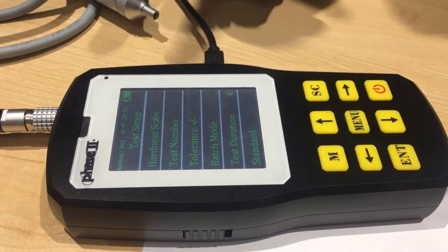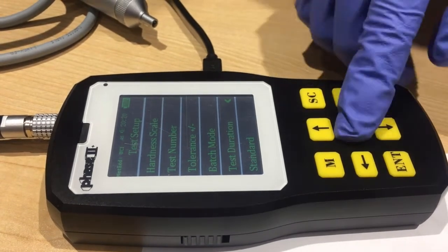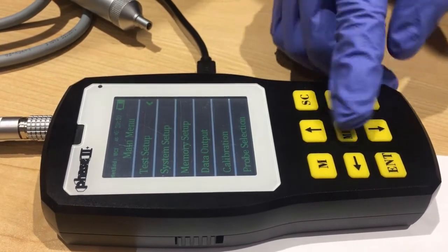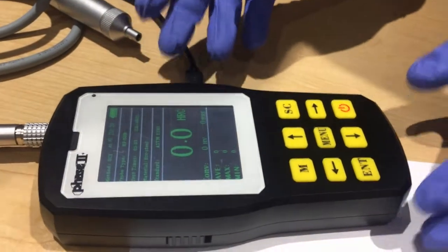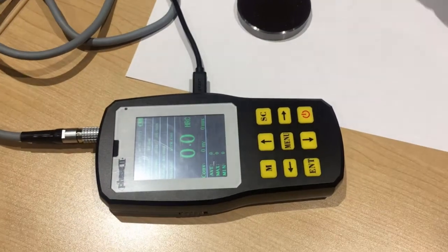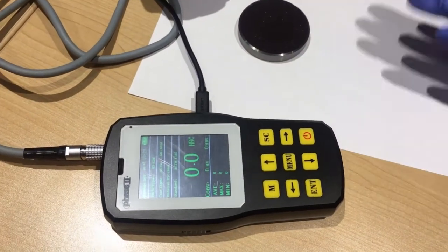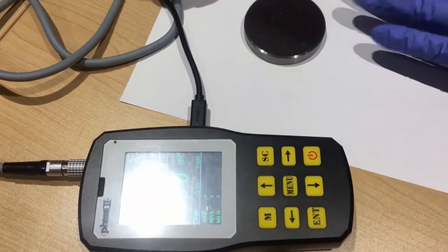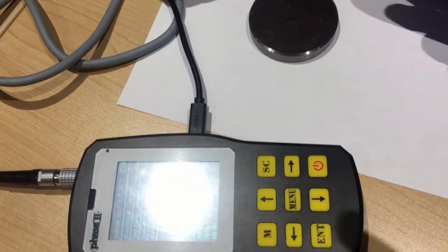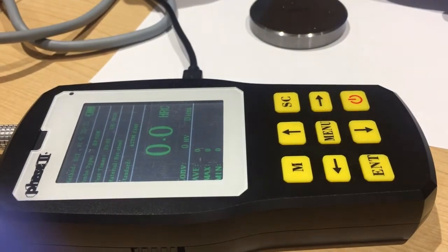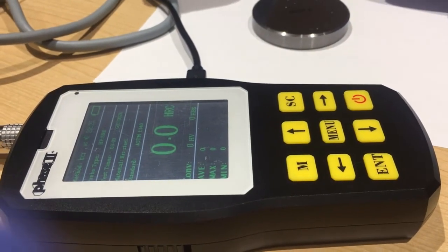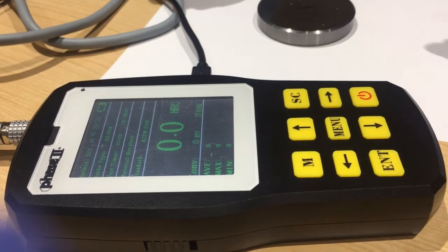If we want to go back to the main service, press menu and press menu again. Now we can start to test it. We're now going to test our machine on the test block. And as a standard test block, the hardness of this block shows on it as 62.4 HRC, so we're going to see whether it works.